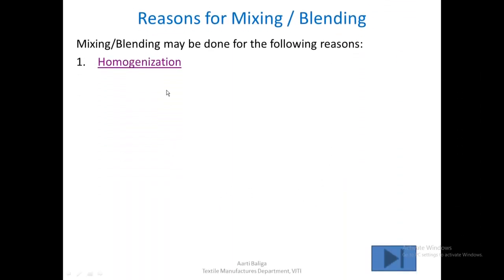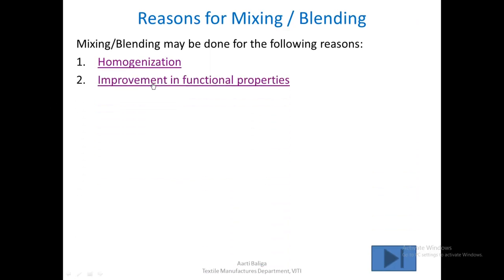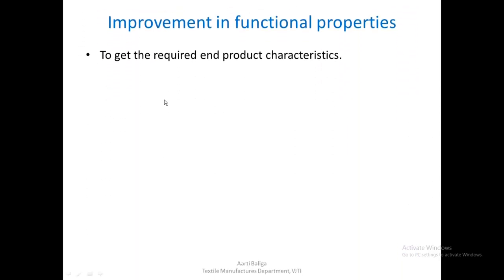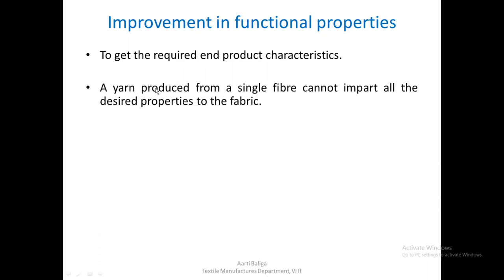The second reason why blending is done is improvement in functional properties — to get the required end product characteristics. A yarn produced from a single fiber cannot impart all the desired properties to the fabric. For example, if we make a fabric from cotton only, we get all cotton properties, but if we want a wash-and-wear fabric, cotton alone cannot provide that characteristic.